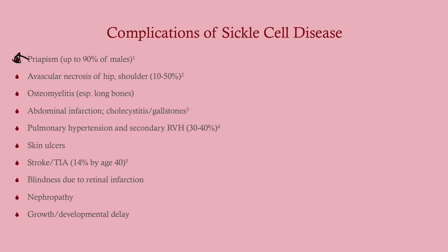Other complications include priapism — which occurs in many patients; treatment is aspiration of blood from the corpora cavernosa, with other routes if that fails. Osteomyelitis is another complication. Abdominal infarctions can occur due to the highly vascular nature of the abdomen. Cholecystitis can develop because, as with any hemolytic anemia, breaking down hemoglobin produces bilirubin which can saturate and form gallstones.